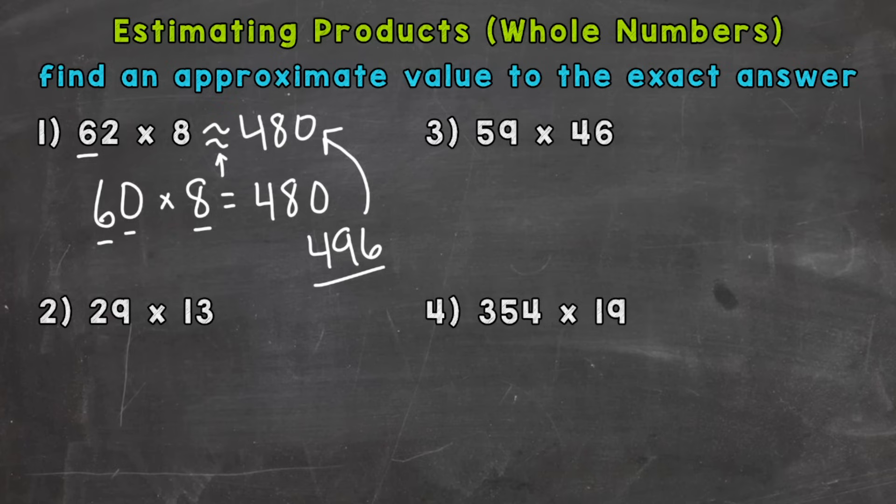Now front-end estimation is usually the simplest and easiest to use, but at times it doesn't give you the best estimate. So what we can do here, we'll round both of these to the tens place. And we get 30 times 10, which gives us an estimate of 300, which would be fine.